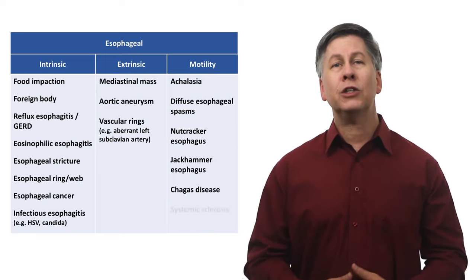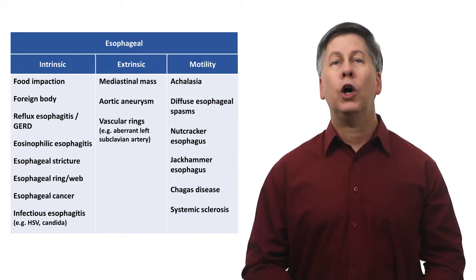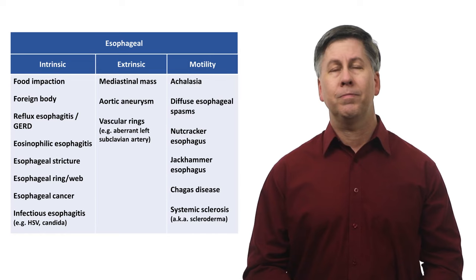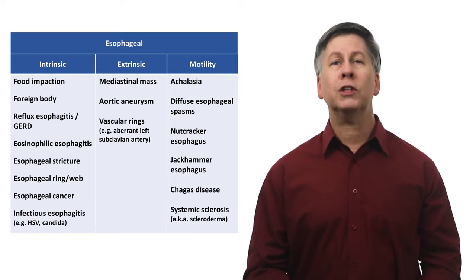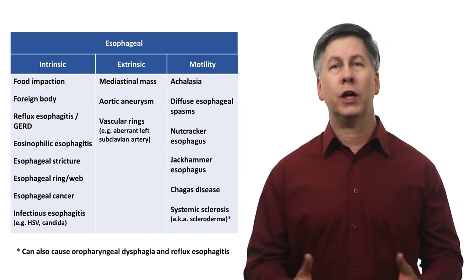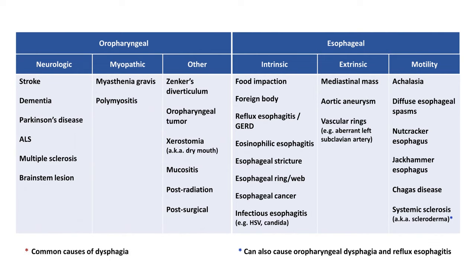At last, an autoimmune disease called systemic sclerosis, also known as scleroderma, can cause a loss of normal peristalsis. Notably, systemic sclerosis can also less commonly cause oropharyngeal dysphagia and reflux esophagitis. Overall, the common causes of dysphagia are neurologic diseases of stroke, dementia, and Parkinson's leading to oropharyngeal dysphagia, and food impaction and reflux esophagitis causing esophageal dysphagia.